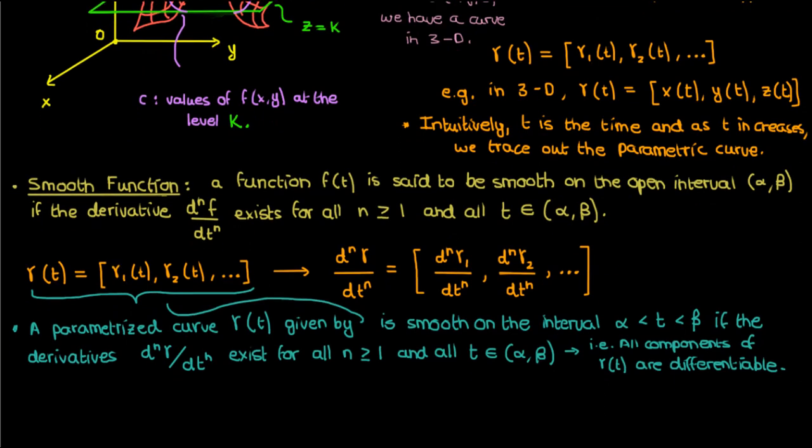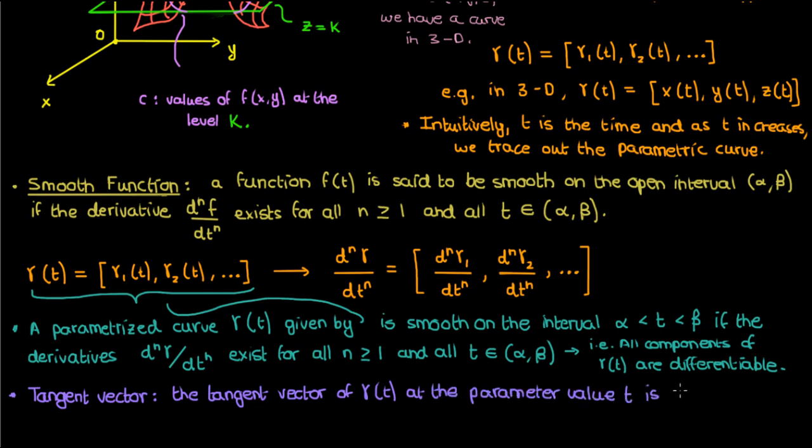Now the last definition I'm going to mention in this video is the definition of the tangent vector to the parametrized curve gamma. This definition says that the tangent vector of gamma of t at the parameter value t is just d gamma by dt.